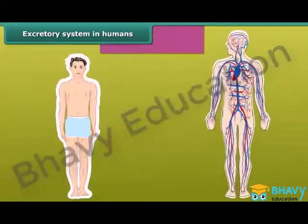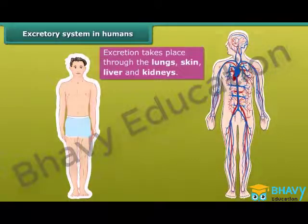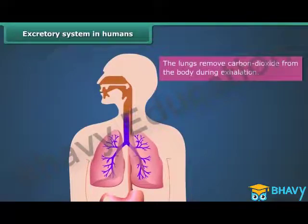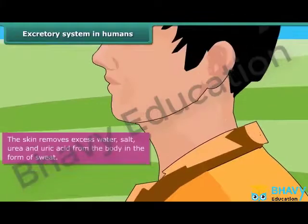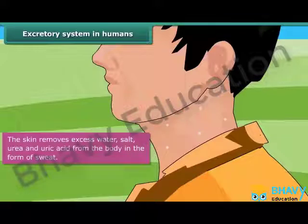Excretion takes place through the lungs, skin, liver, and kidneys. The lungs remove carbon dioxide from the body during exhalation. The skin removes excess water, salt, urea, and uric acid from the body in the form of sweat.